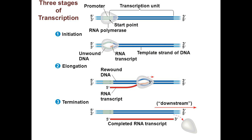Now that we've covered the basics of transcription and translation, we can look at these processes in more detail. Transcription follows three steps: initiation, elongation, and termination. For initiation, a sequence in DNA called a promoter is needed — it marks the place where an enzyme called RNA polymerase starts the process of transcription. But here there are some differences between the domains of life.